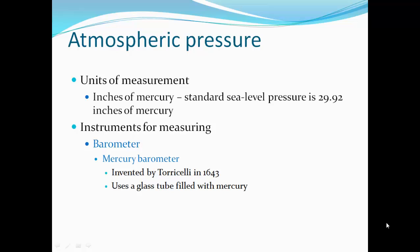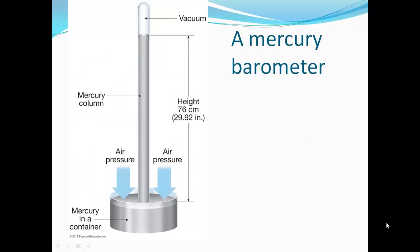The instrument we use for measuring atmospheric pressure is a barometer. A mercury barometer was invented by Torricelli in 1643. It uses a glass tube filled with mercury. As air presses down on a plate, it pushes mercury up the tube, and you measure the height that the mercury goes up — that's 29.92 inches.